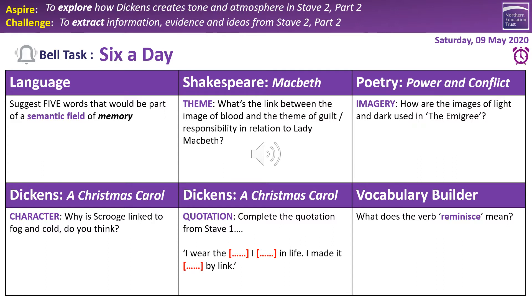For the Christmas Carol boxes — why is Scrooge linked to fog and cold? We've talked about this many times. The cold represents the idea of him ignoring and rejecting the outside world, and also his emotional coldness — how closed off he is, how insular and all those sorts of things.